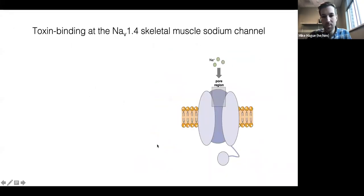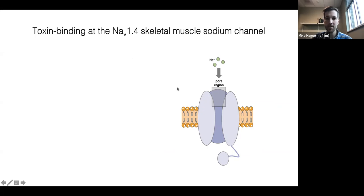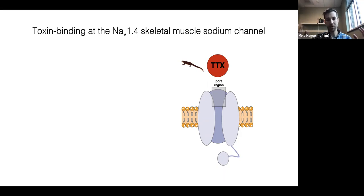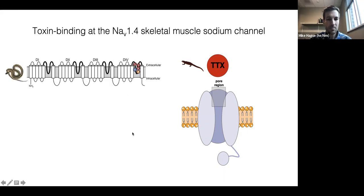Now I want to zoom down to the cellular molecular level and tell you a little bit about how tetrodotoxin acts on sodium channels. It acts on voltage-gated sodium channels, including the NaV1.4 skeletal muscle sodium channel expressed in muscle tissue. These sodium channels have a pore region that allows the selective influx of sodium ions, which is critical for the propagation of action potentials in muscle and nerve tissue. Newts contain tetrodotoxin, a small molecule that binds to the pore region and prevents the influx of sodium ions — obviously very deleterious if you're trying to use muscles to breathe after eating a toxic newt. Garter snakes have specific amino acid changes in the pore that disrupt tetrodotoxin binding and confer large increases in resistance.